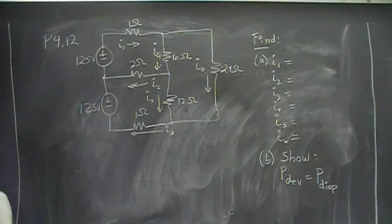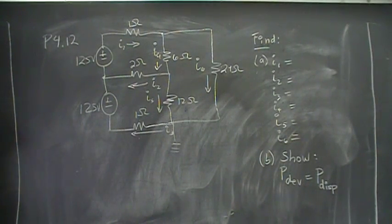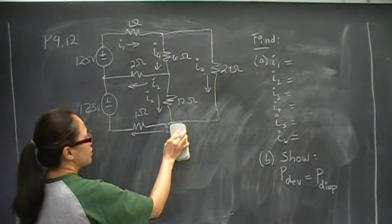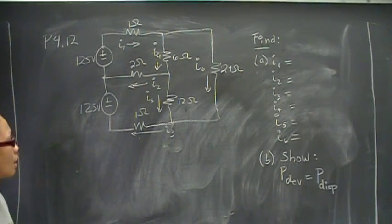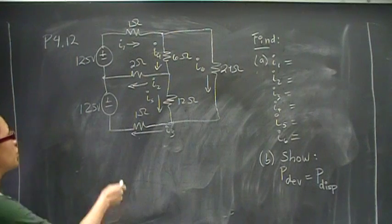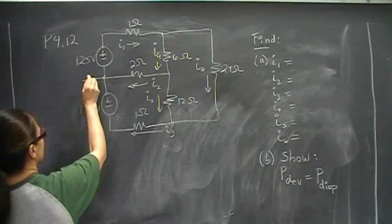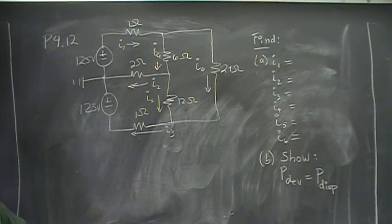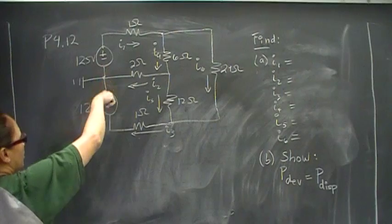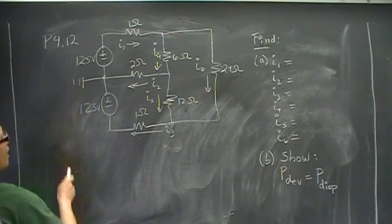The first thing that you want to do is choose the ground or the reference node. Typically, you're probably used to picking the reference node at the bottom, and it would work, but it would be really hard. If you notice that 125 volts here and 125 volts here, the voltage potential difference there is zero, so this is a very natural place to place the ground or the reference node. Everything along this node right here is zero, everything is 125 volts. So that's where I'm going to pick my ground to be.